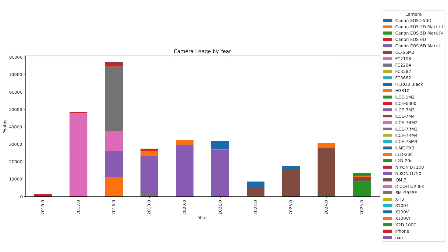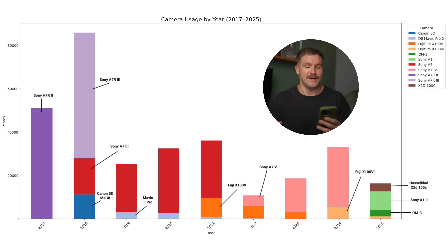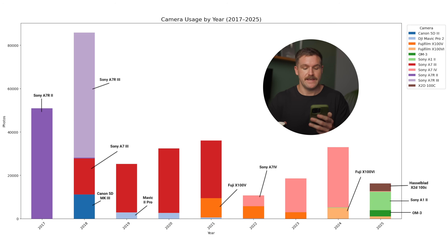I think the period of obsession is important for anyone in a creative field. Looking at a breakdown by camera, the first time I ran the analysis it gave me pretty much every camera I've ever shot with, which was way too difficult to understand. So I eliminated any camera that I haven't shot at least 2,000 photos on, and this is the graph that I got — a little bit more easy to understand.